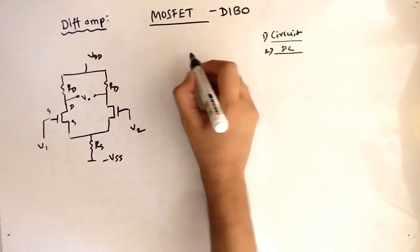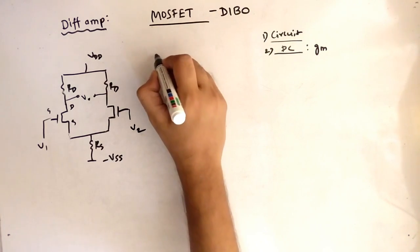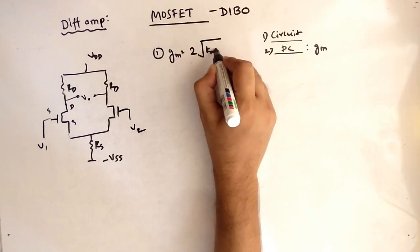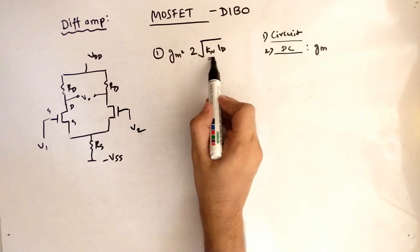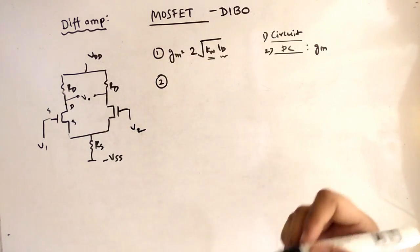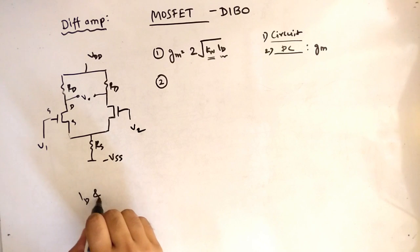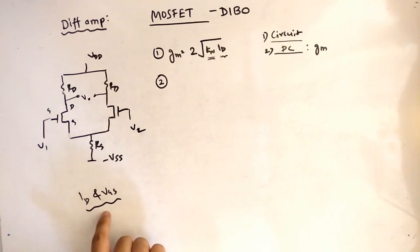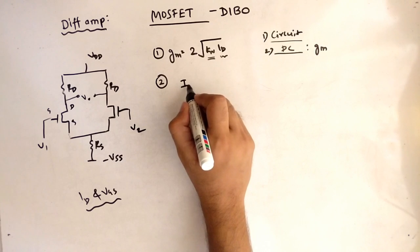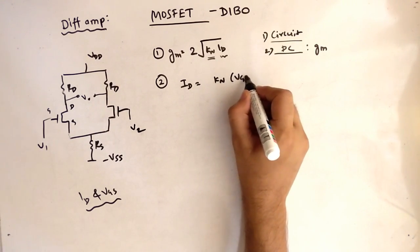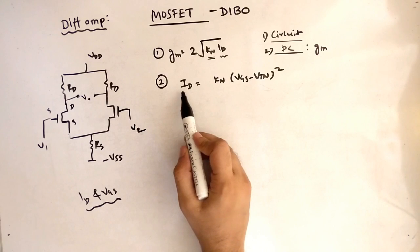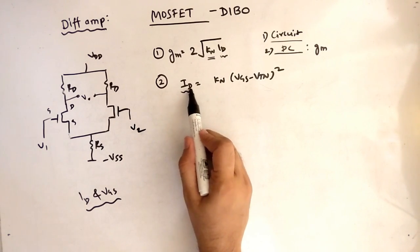Now let's talk about DC analysis. In DC analysis, we need to find gm. The equation for gm is: gm = 2√(kn · id). Here, kn will be given in the question, but id is not given, so our task is to find id. Note that id and vgs are both unknown. The equation for id is: id = kn · (vgs − vt)², assuming the MOSFET is in the saturation region.